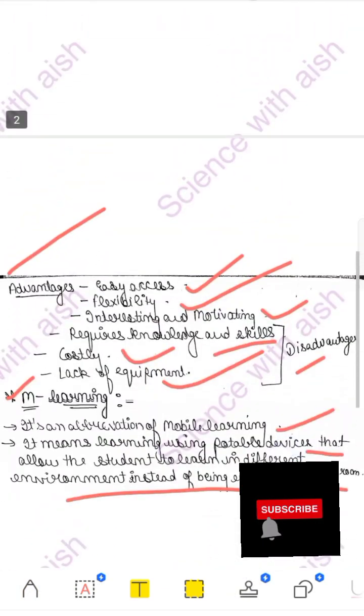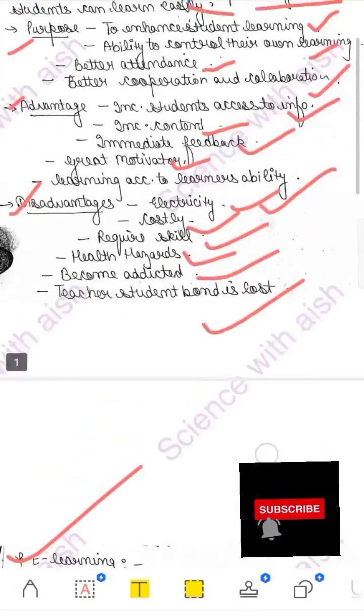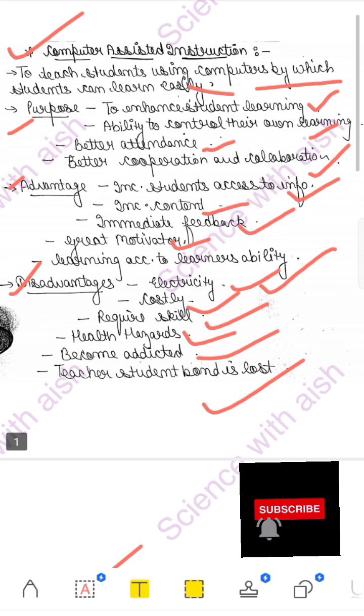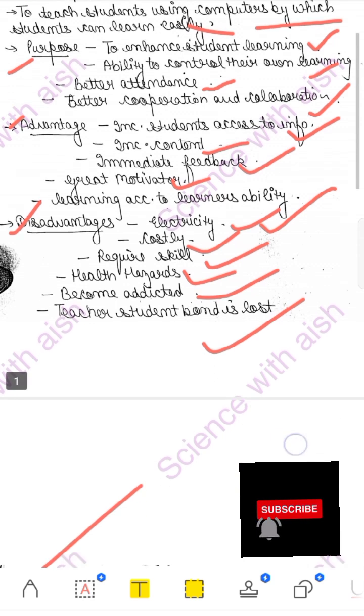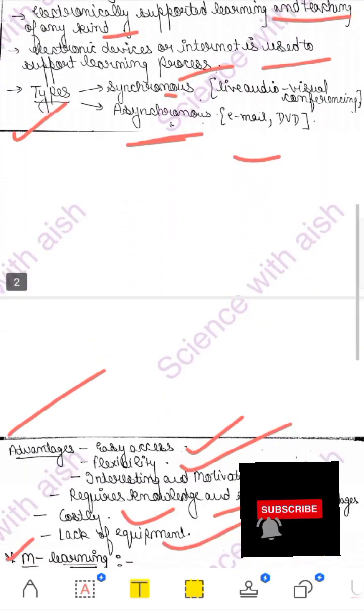M-learning is clear. E-learning is when you use any electronic device. Computer-assisted instruction is when you learn through the computer. So, I hope these three topics are clear. Okay. If your video is good today and understandable, then please don't forget to like and subscribe to my channel. Thank you very much.